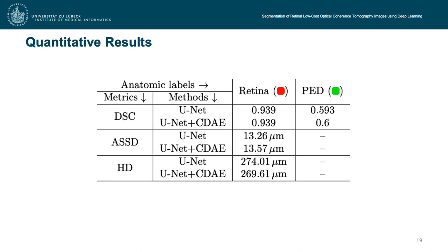The quantitative results are shown in the following table. The retina could be segmented with high accuracy, with a Dice overlap of almost 0.94, whereas the segmentation of PED areas was more challenging, achieving a Dice of about 0.6. The average symmetric surface distance and Hausdorff distance were calculated to investigate the effect of the autoencoder refinement. The average symmetric surface distance increased slightly compared to the U-Net, explained by the smoothing properties of the autoencoder. In contrast, the Hausdorff distance was slightly reduced, indicating a reduction of outliers. However, the quantitative difference between the U-Net and the autoencoder refinement is very small.